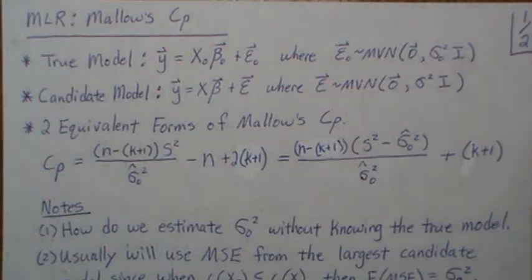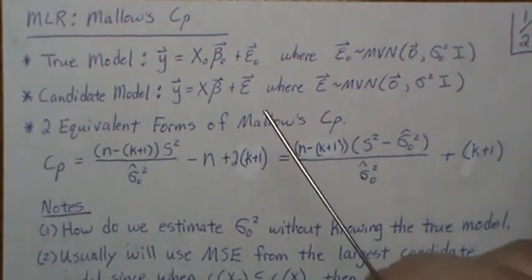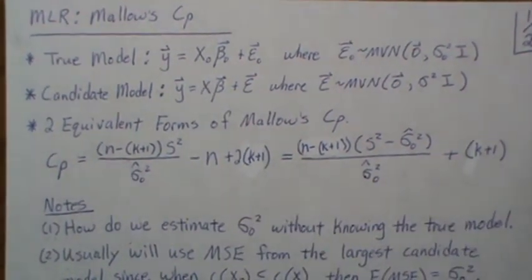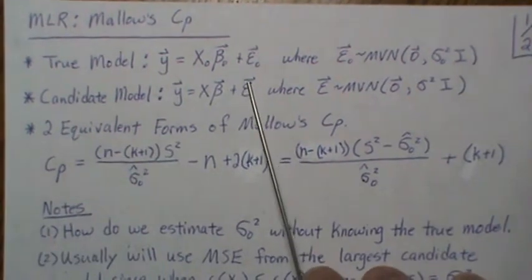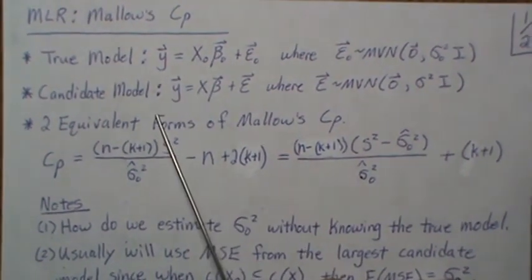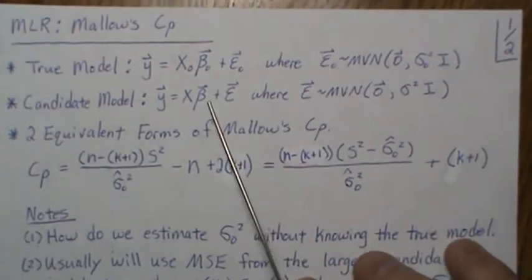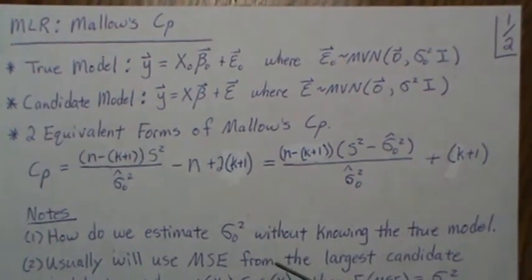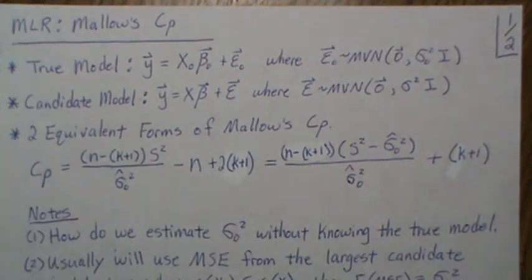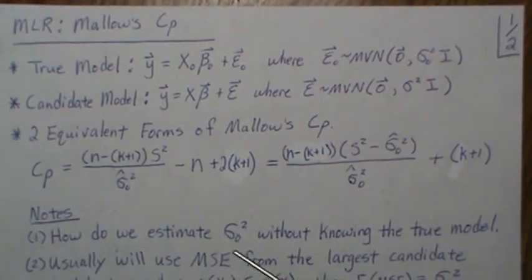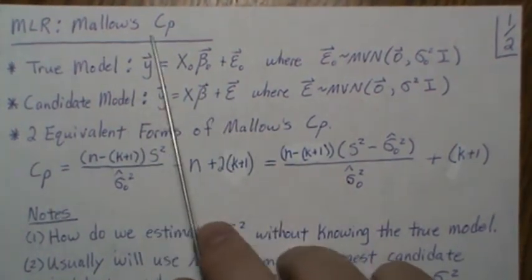In this video we're in the multiple linear regression setting and we're going to look at Mallow's CP. CP stands for conceptual predictive statistic. There's a true model out there somewhere and we want to pick candidate models that best replicate this true model. We don't know the number of predictor variables needed, so we calculate statistics indicative of the best-fitting model, and one of those is Mallow's CP.